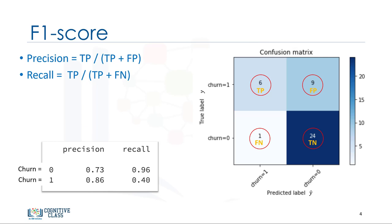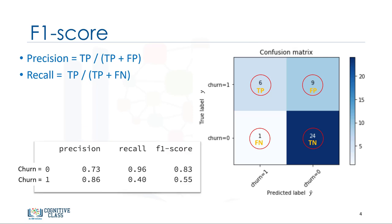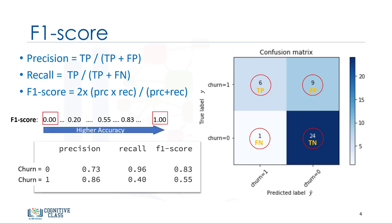Now we're in the position to calculate the F1 scores for each label, based on the precision and recall of that label. The F1 score is the harmonic average of the precision and recall, where an F1 score reaches its best value at 1, which represents perfect precision and recall, and its worst at 0. It is a good way to show that a classifier has a good value for both recall and precision. It is defined using the F1 score equation.